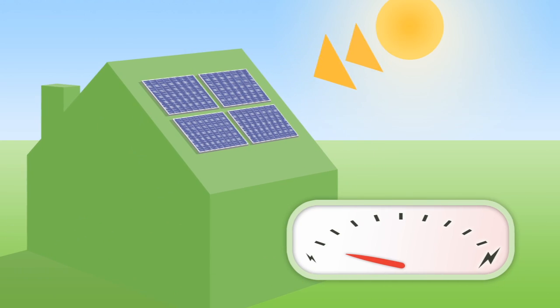Light shines on the PV panels and creates a direct current of electricity. The brighter the light, the more electricity generated.